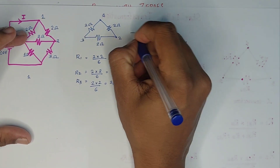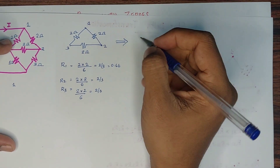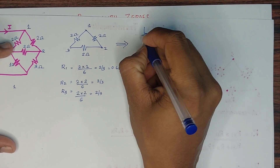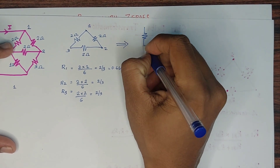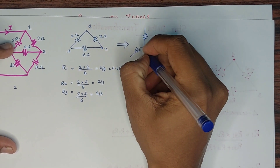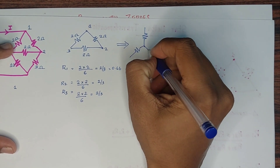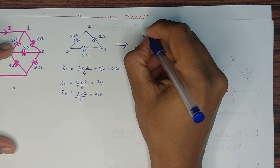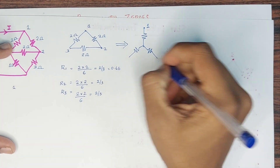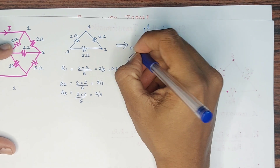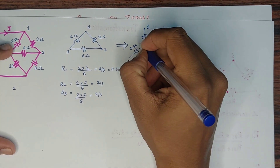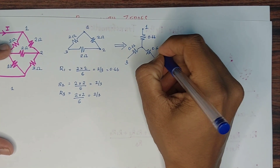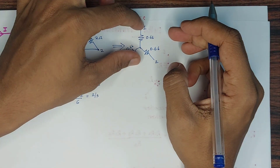Now, how do I replace this network? Here, here, here, and here — there is a star to replace this network. So this is node 1, 2, 3. Each star arm is 0.66 ohm, 0.66 ohm, 0.66 ohm. Now I will replace this network.